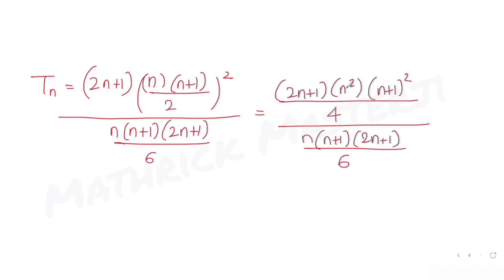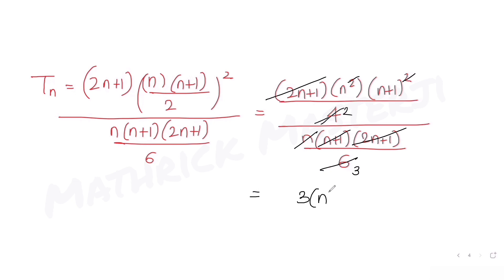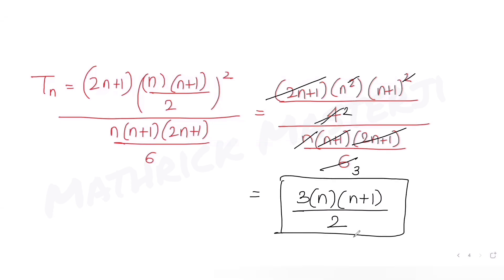Cancelling terms: n and (n+1) cancel out, and (2n+1) cancels out. We are left with 6/4, which simplifies to 3/2. So the nth term simplifies to 3n(n+1)/2.